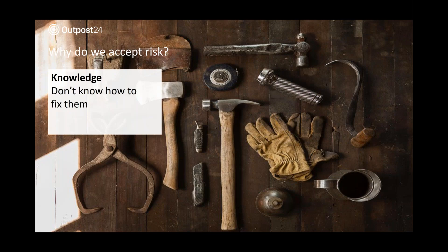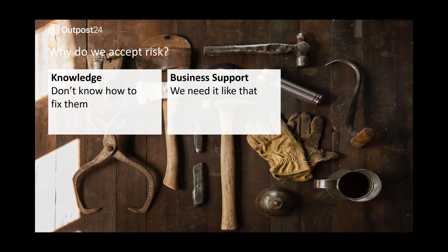So why do we accept risk? We have a tool to score risk in CVSS, but why do we accept them? One reason is knowledge — we don't know how to fix them. We don't have the expertise and we don't know what impact a fix may have. Another is business support — 'we need it like that.' You're running an application for recording customer service calls, it's running with PHP version two which is ancient and full of vulnerabilities, and the business turns around and says, 'but it does the job, we're not going to change, we haven't got the money to change.' So the first thing people do is accept that risk. The last one is time — we don't have time to test and fix.